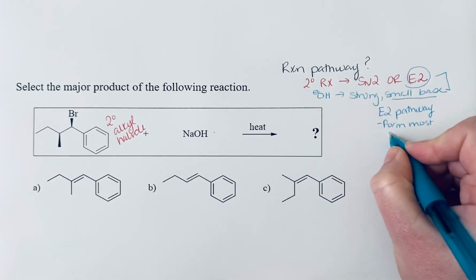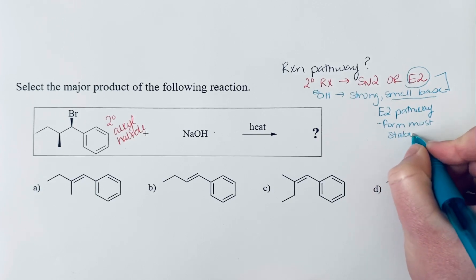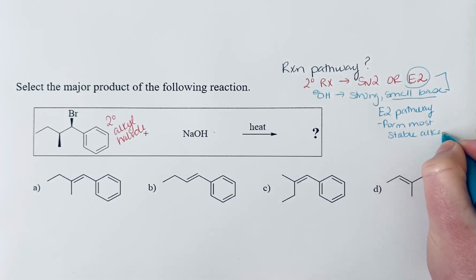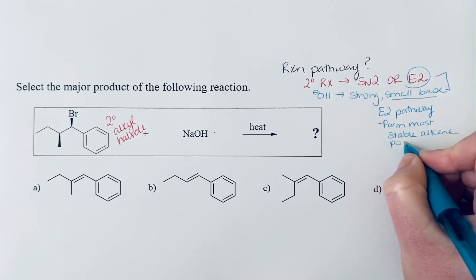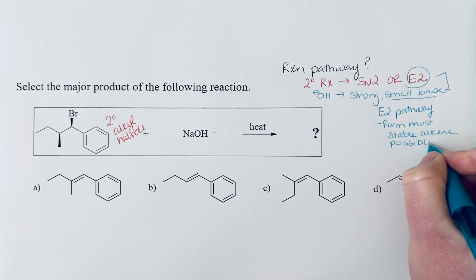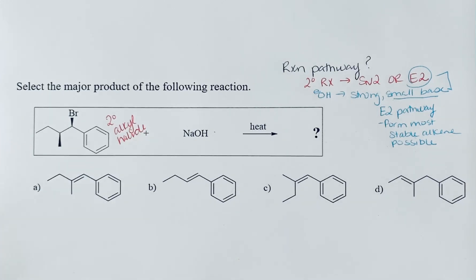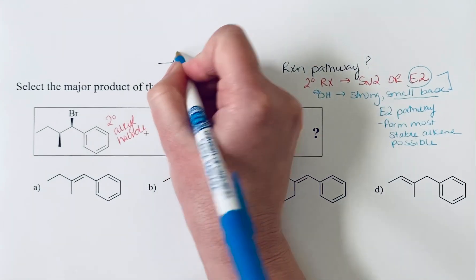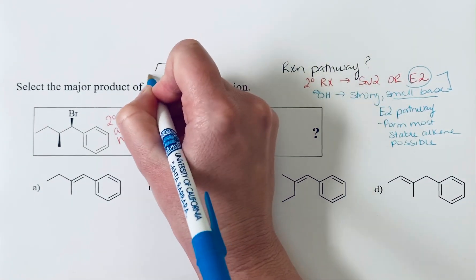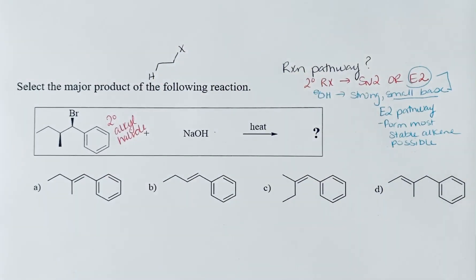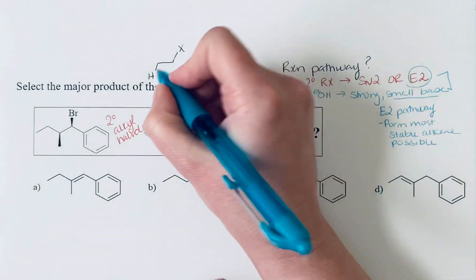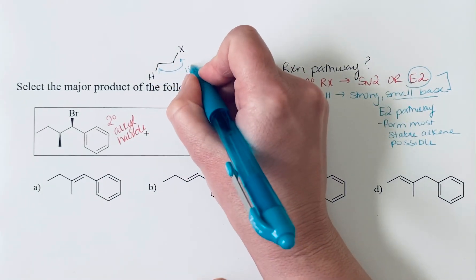So with the E2 pathway, this is a concerted mechanism. I'm going to draw a generic mechanism here. I drew the hydrogen and the leaving group 180 degrees apart because that's how they need to be oriented in order for this reaction to work.